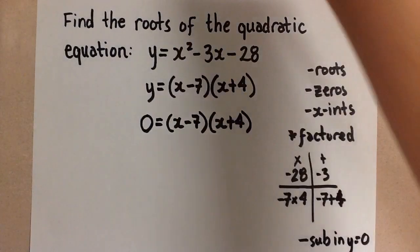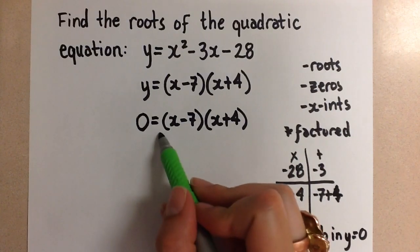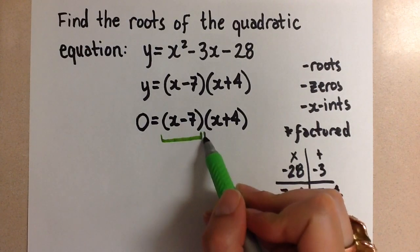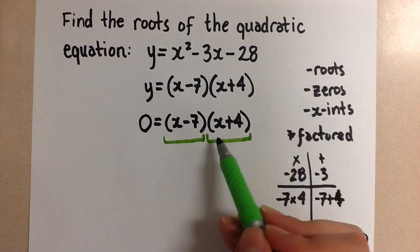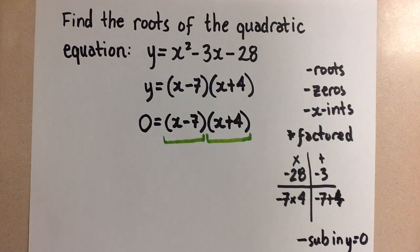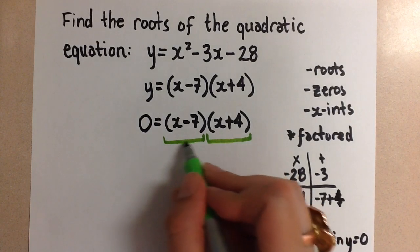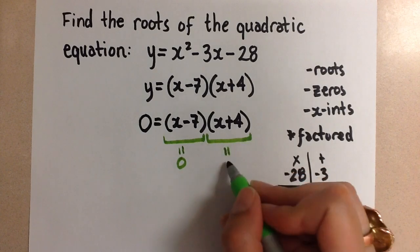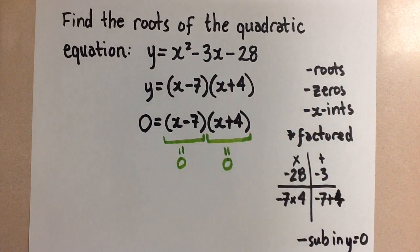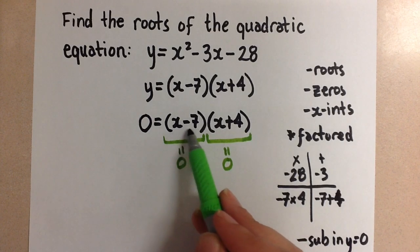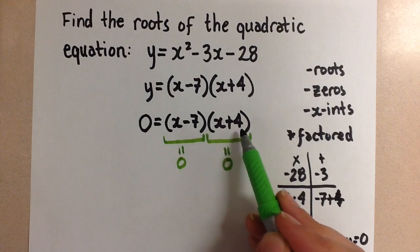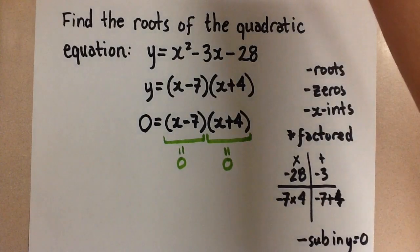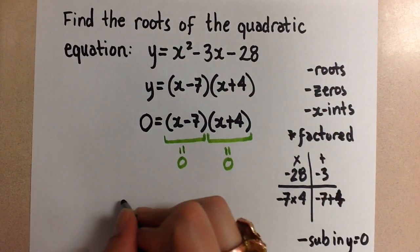So now we need to think, we have two factors here. We have this and we have this part. These two pieces multiplied together have to equal 0. This will only happen when this binomial equals 0 or this binomial here equals 0. So we can separate these like this.